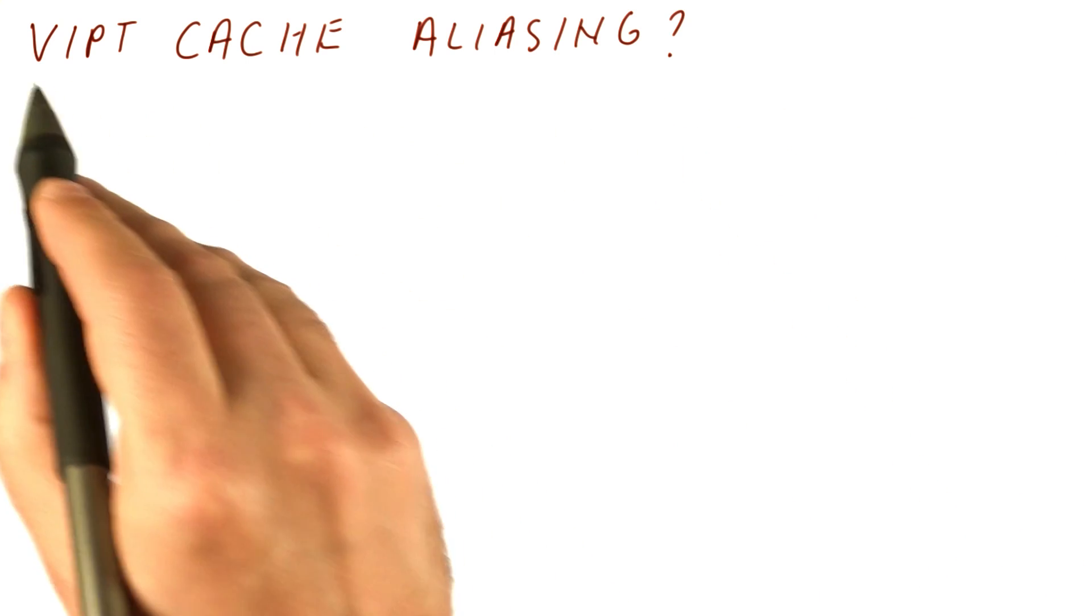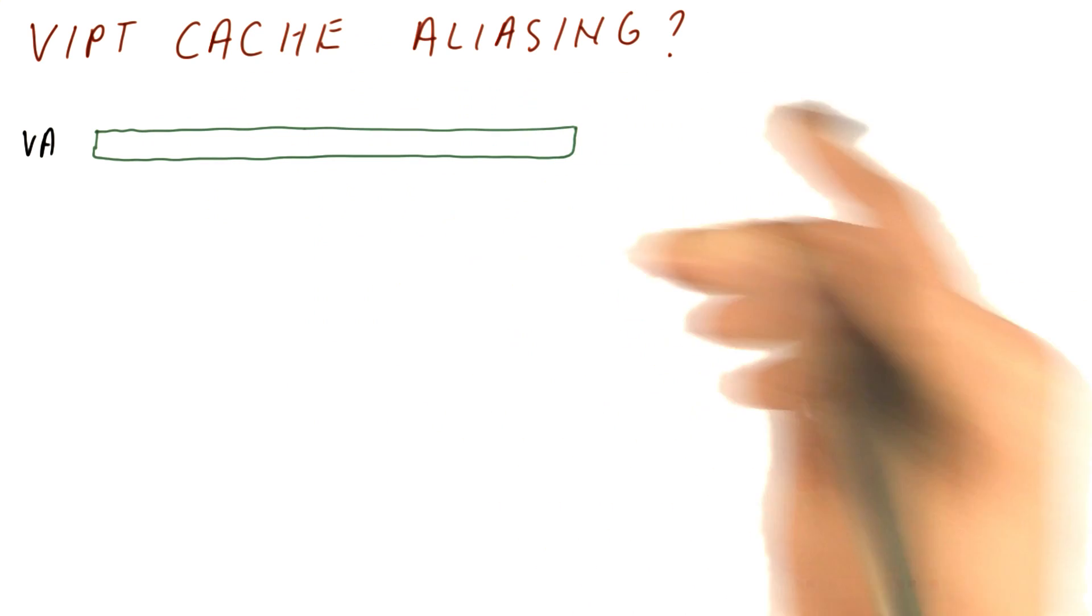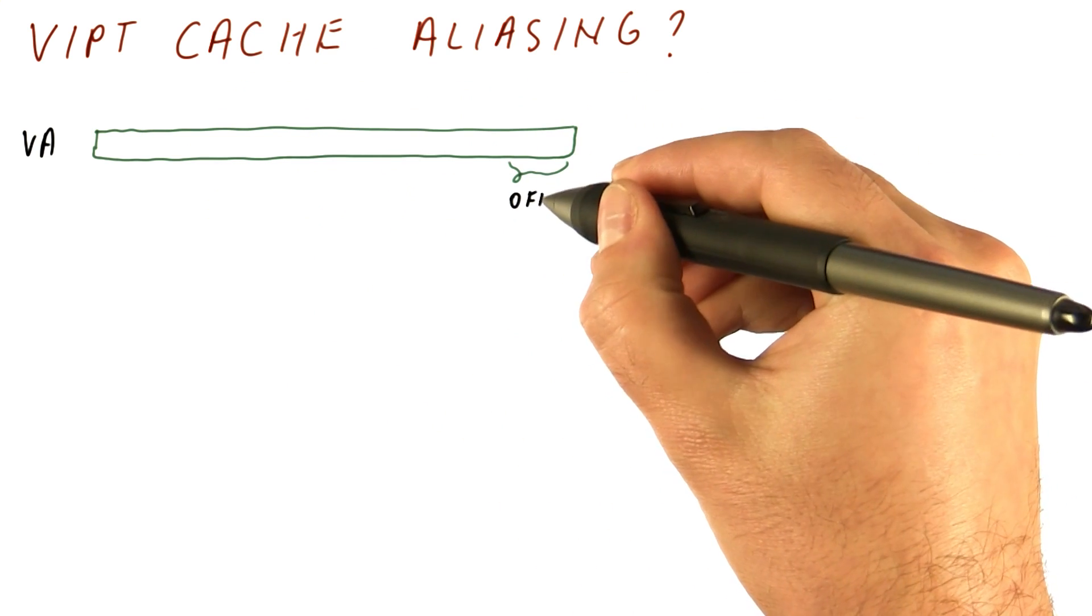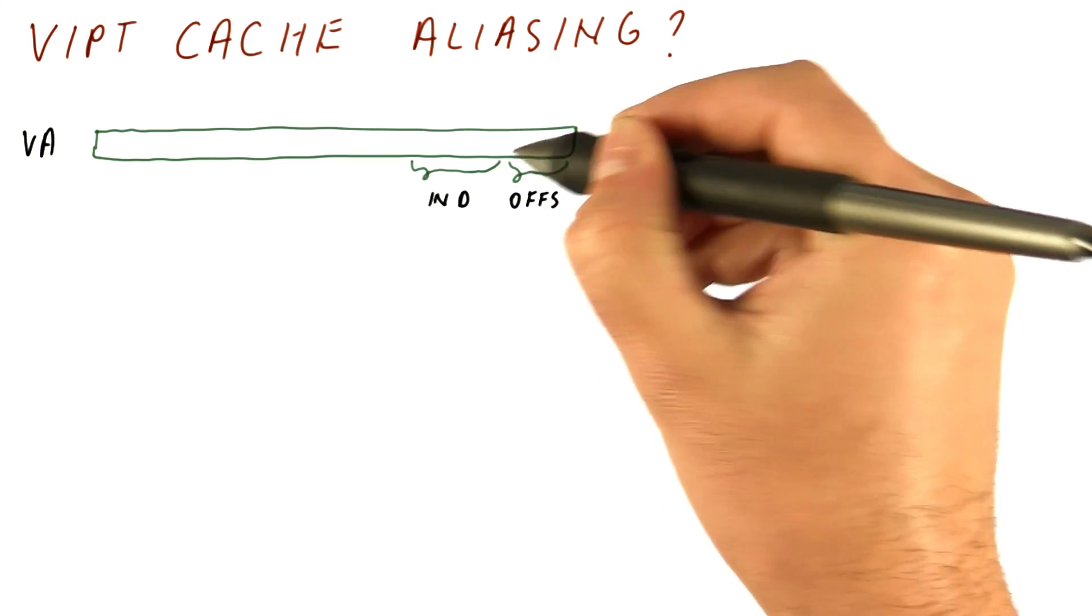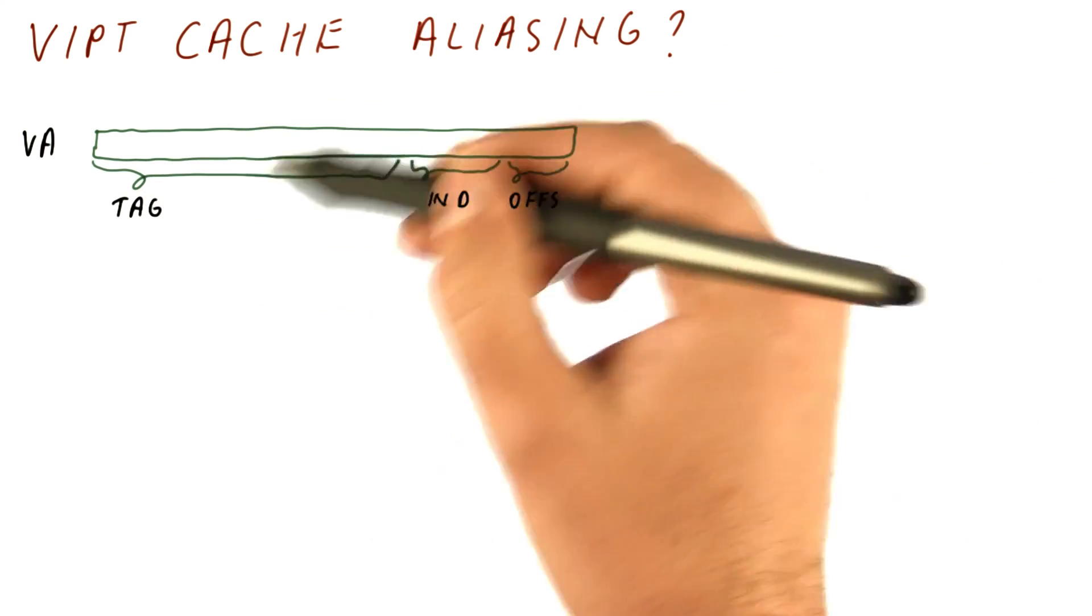So let's look at the problem of aliasing in the virtually indexed physically tagged caches. This is our virtual address, and the way we access the cache is, these are the offset bits, this would be our index bits, and this would be the tag if we use this to access the cache.